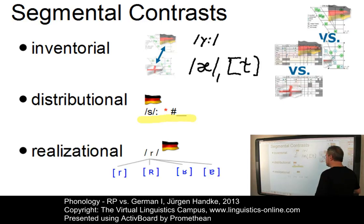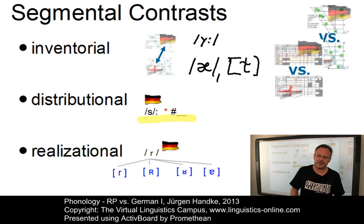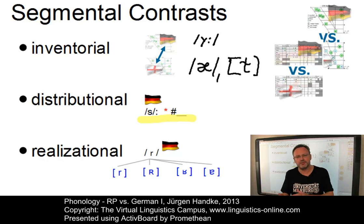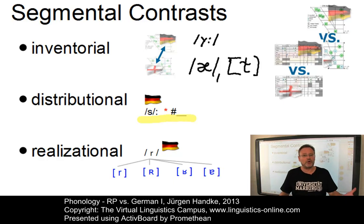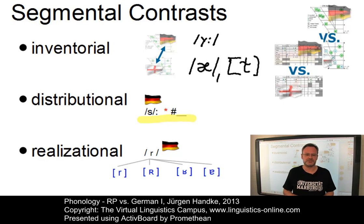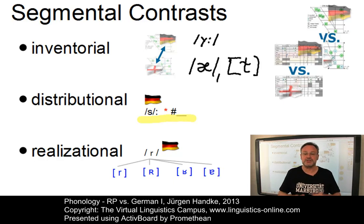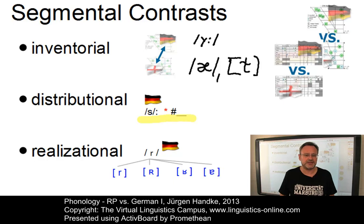The third group can be referred to as realisational contrasts. Here the phonemes of the two languages in focus might be similar; however, their precise realisation is different. For example, if you look at the low back vowels in RP versus German, or the realisation of the R phoneme in both languages. Let us now inspect the segmental differences between both languages in a contrastive manner in order to find out the precise remedial actions to overcome these difficulties at a later stage.